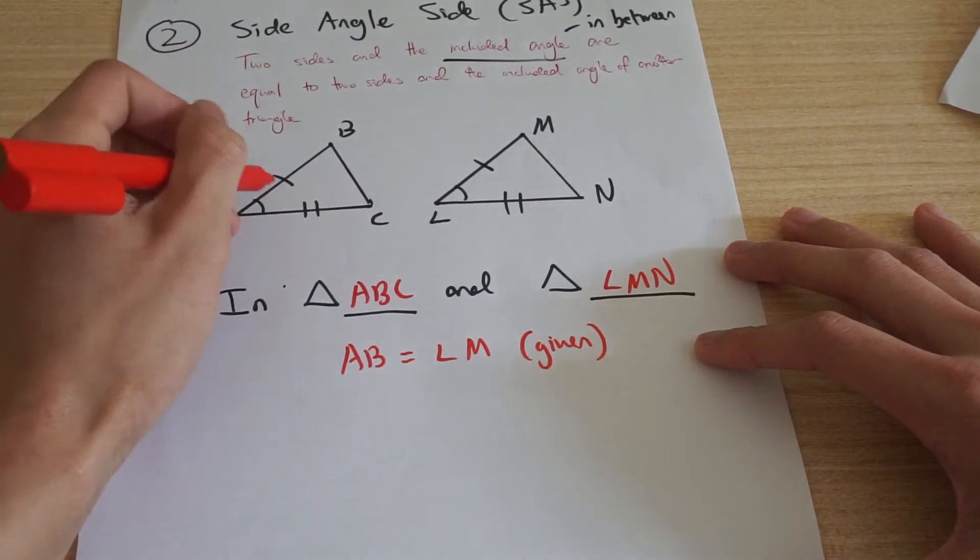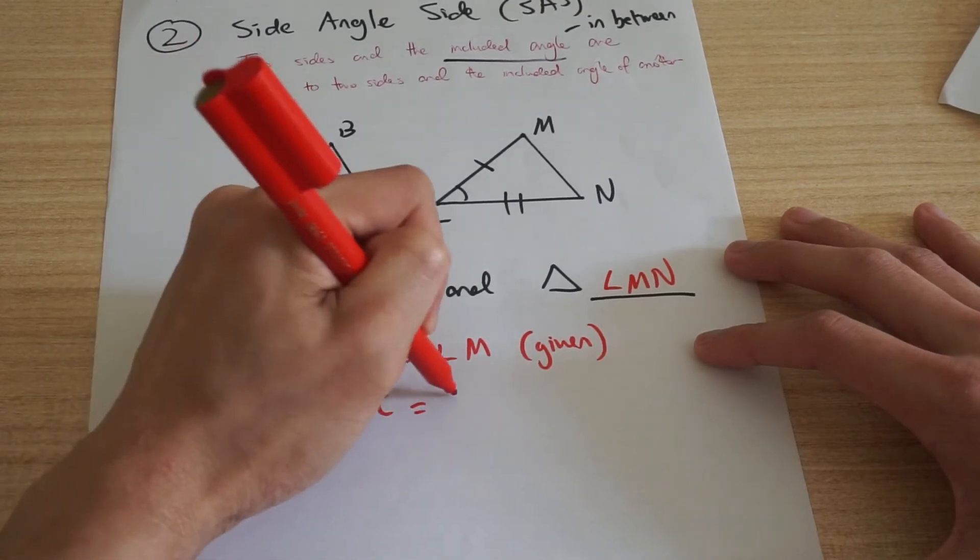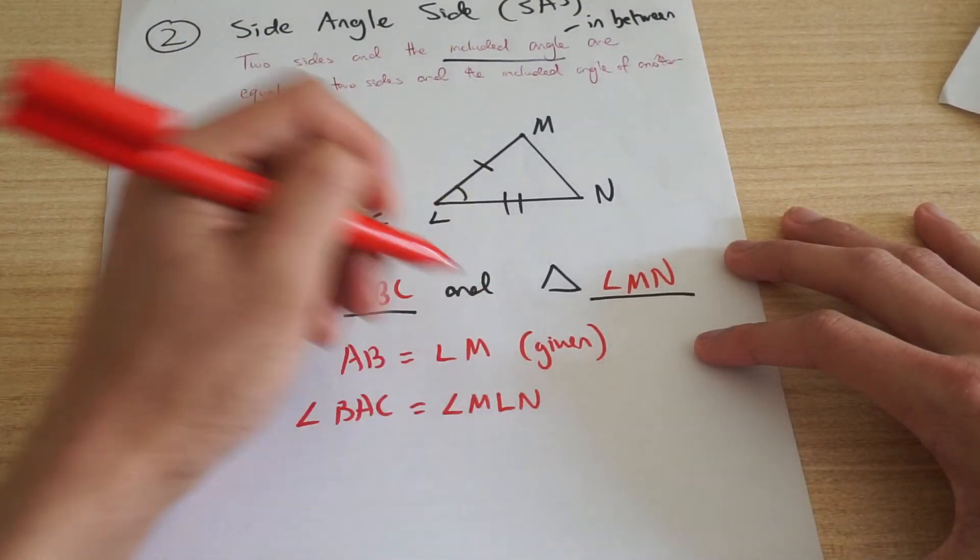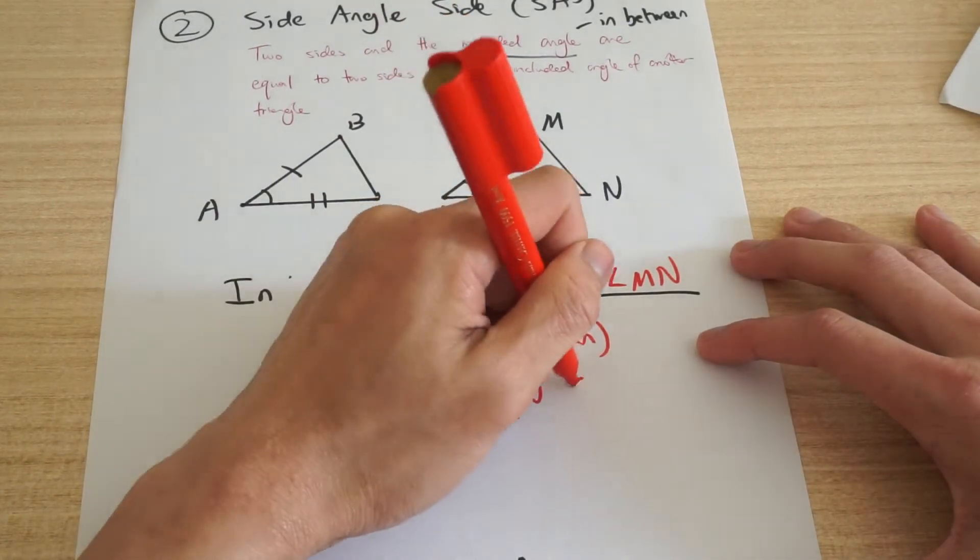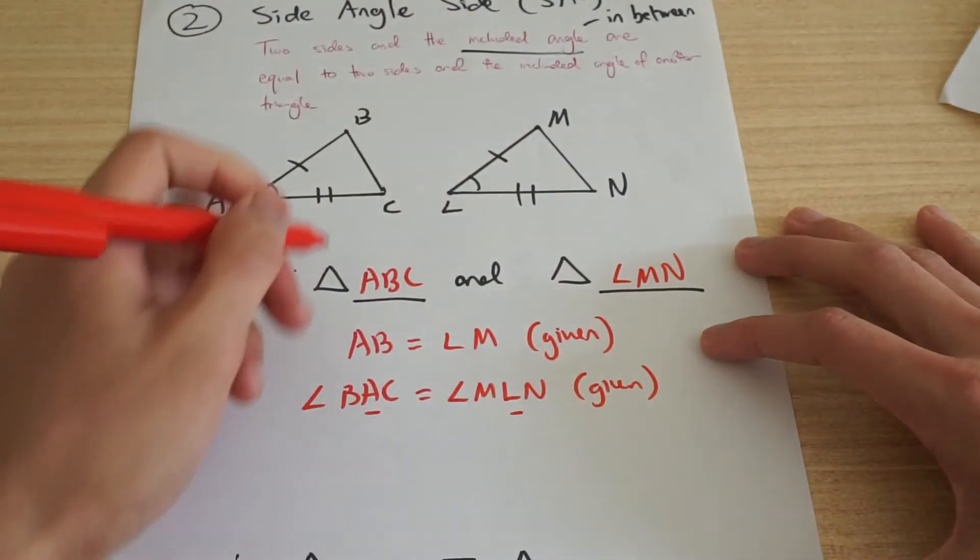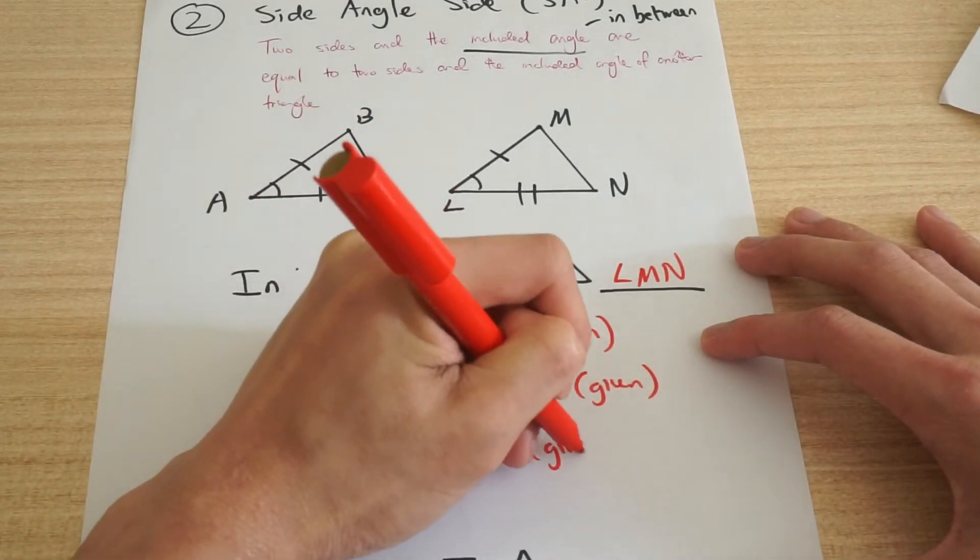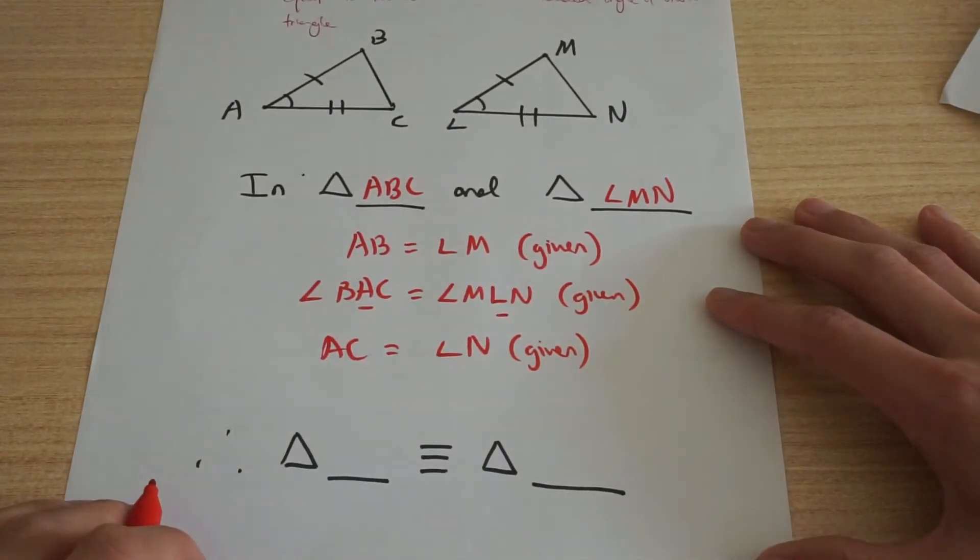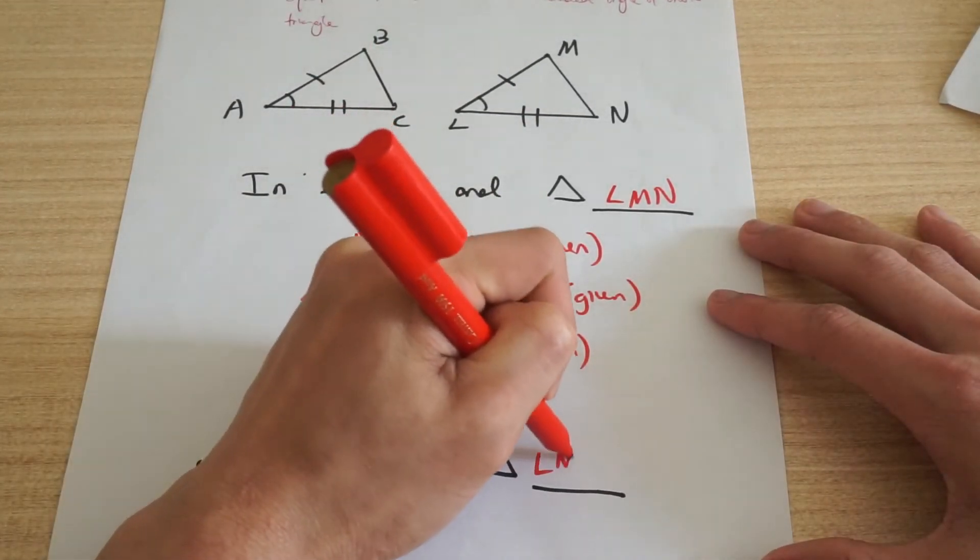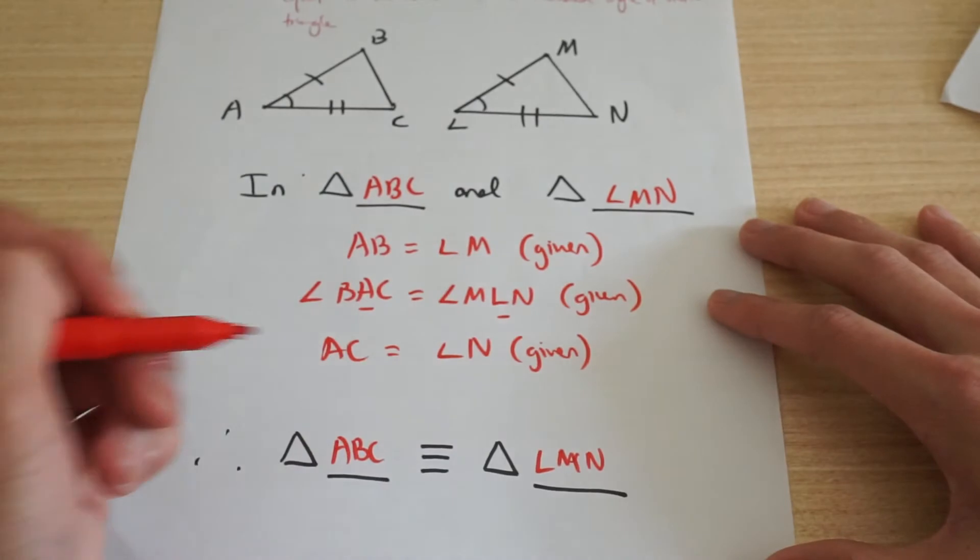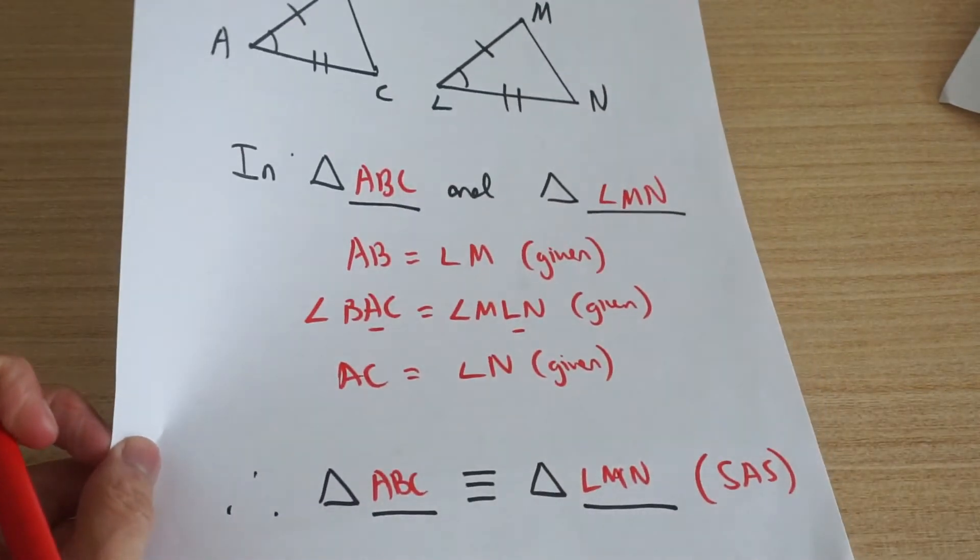I know this angle here and this angle here are equal. So how do I refer to that? Well, I say angle BAC equals to angle MLN. And that's because the one I'm talking about is the one in the middle. So that's how I refer to my angles. And that's given. And my last side AC is equal to LN. And so how do I finish off? Well, I finish off by saying, okay, so my triangle is ABC and LMN. They're congruent. What's my reason? Well, I used SAS.